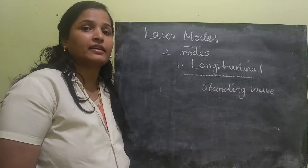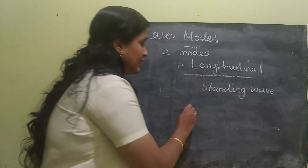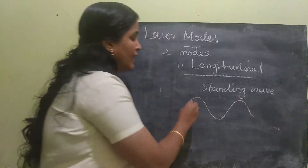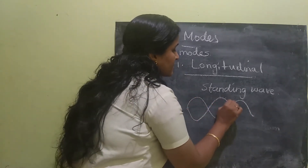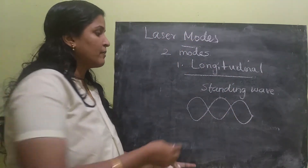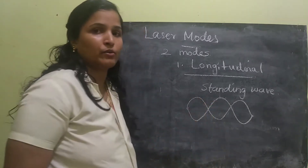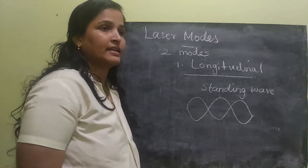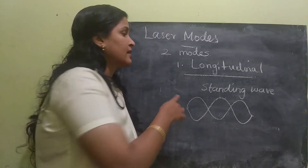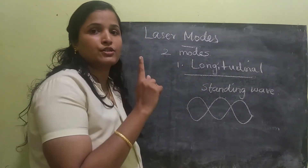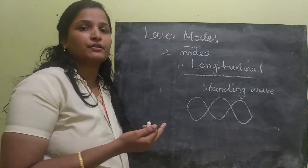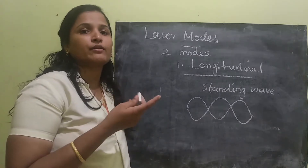What is a standing wave? A standing wave is two waves having equal amplitude but opposite direction — the direction will be opposite but the magnitude will be equal. So if there is one standing wave, then the longitudinal mode is one. If the laser is operating in more than one longitudinal mode, it will have more than one standing wave.